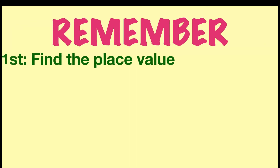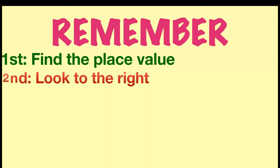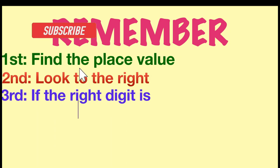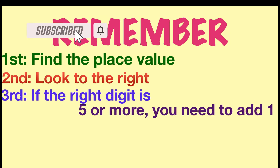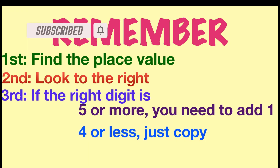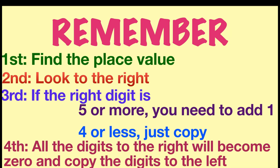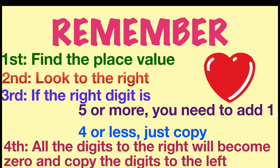To end this, always remember the four steps in rounding off numbers. First is find the place value. Second, look to the right. Third, if the right digit is 5 or more, you need to add 1; but if it is 4 or less, just copy. Lastly, all the digits to the right will become 0 and copy the digits to the left.